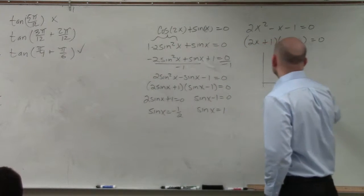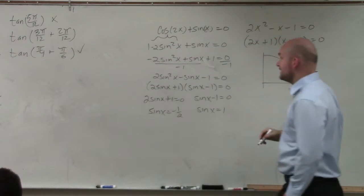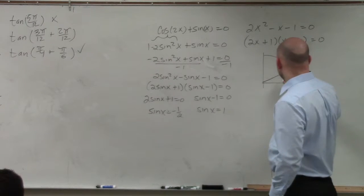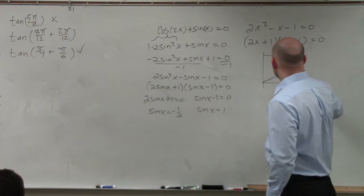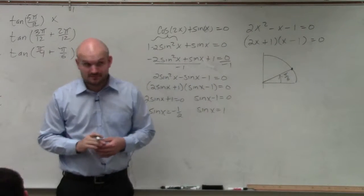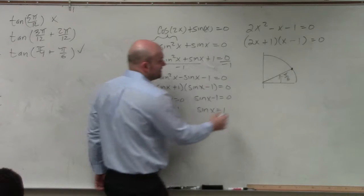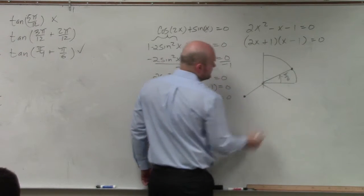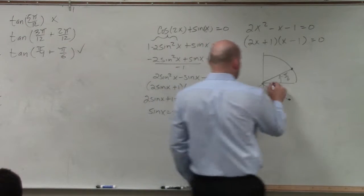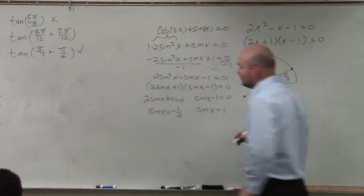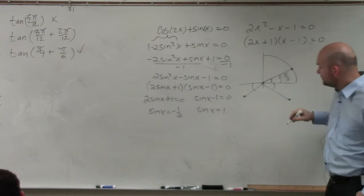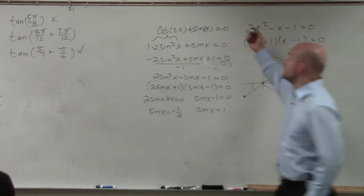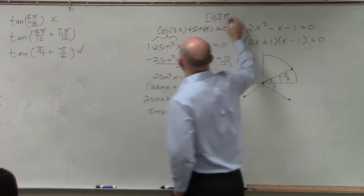So I go to my unit circle. And I say, all right, when is sin equal to negative 1 half? Well, it's equal to 1 half at pi over 6, right? So therefore, it's going to be equal to negative at those two points where the reference angle is still pi over 6. Those are all equivalent. So what are these two angles then? Between 0, I'm sorry, I should have added that. Your problem says between 0 and 2 pi.